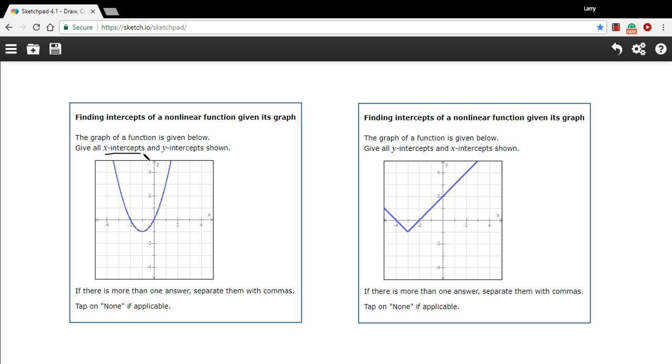The x-intercepts of any function are going to be the spots where it crosses the x-axis. So that spot and that spot. And we just give the x value. So your x-intercepts are at negative 2 and 0. Not too tough.